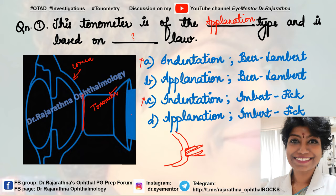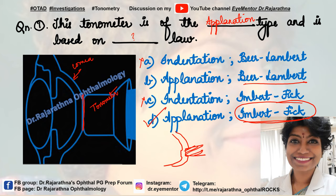So it's not option A nor option C. Between option B and option D — option B is Beer-Lambert law and option D is Imbert-Fick law. Beer-Lambert is something to do with illuminance. We all know that the applanation tonometer is based on Imbert-Fick law. So the answer is applanation type of tonometer, based on Imbert-Fick principle.